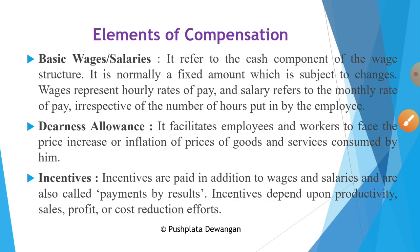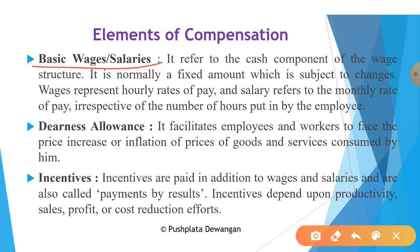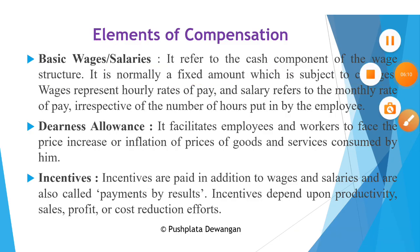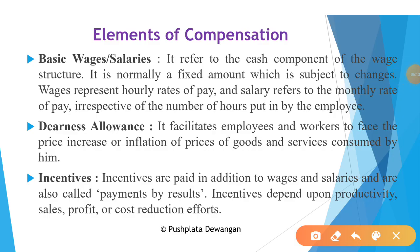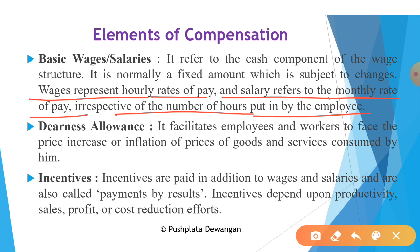The first element of compensation is basic wage or salary. It refers to the cash payment component of a wage structure — normally a fixed amount subject to changes. Wage represents the hourly rate of pay, and salary refers to the monthly rate of pay irrespective of the number of hours put in by the employee.